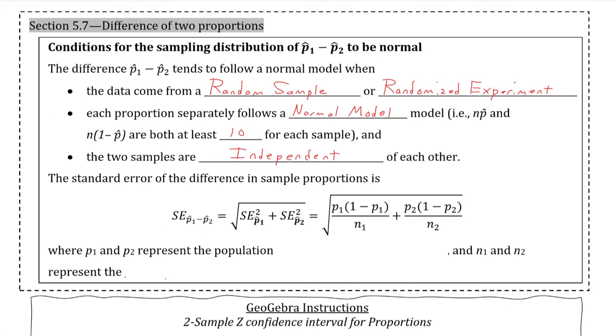Now, we can do this by hand. However, we are most commonly going to be using some more statistical processes using GeoGebra, which you will see in the next example. Note that p sub 1 and p sub 2 represent the population proportions, and n sub 1 and n sub 2 represent the sample sizes.